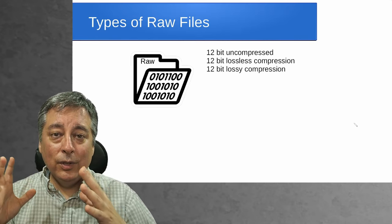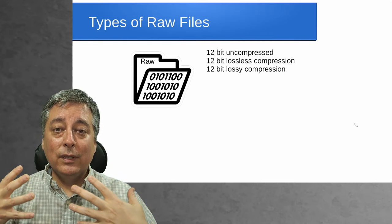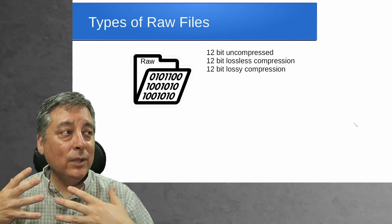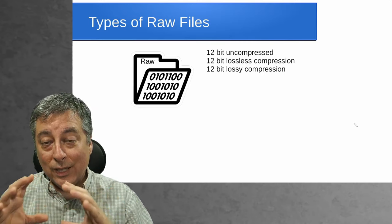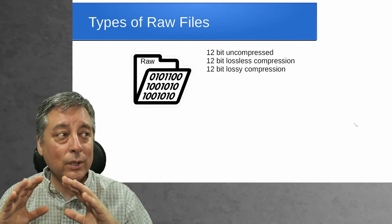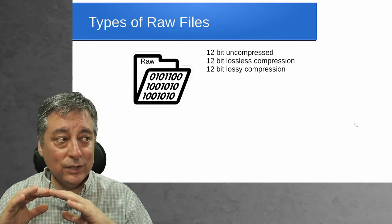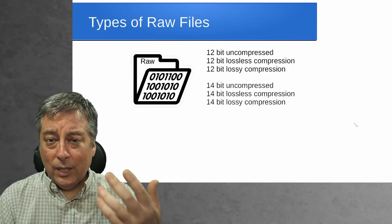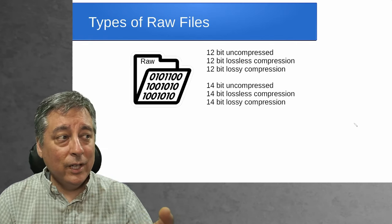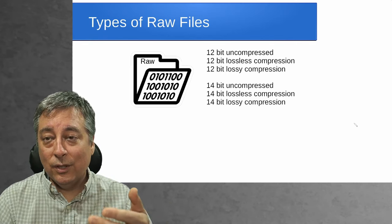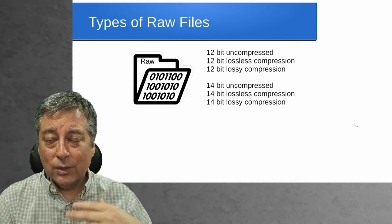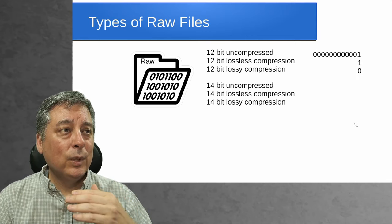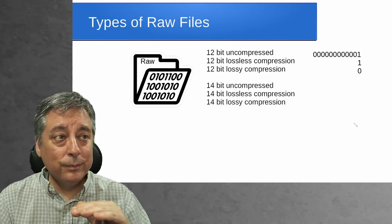You may have heard that our cameras can create 12-bit RAW files, and sometimes they're even distinguished further as 12-bit uncompressed, 12-bit lossless compression, or 12-bit lossy compression. Some cameras are also capable of recording 14-bit RAW files in the same order: uncompressed, lossless, or lossy. Some can do all of those, some can do just some of those, some can only do one. But what's the difference between all of these different types of files?